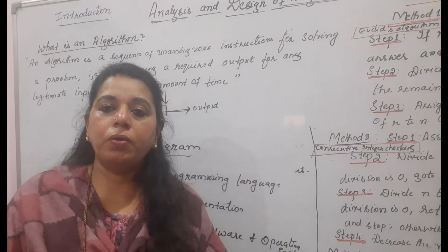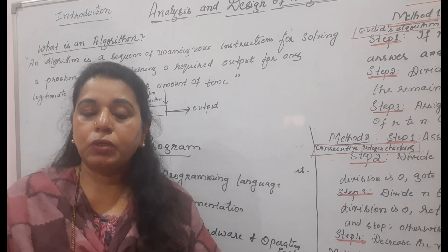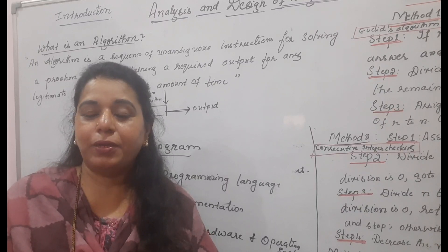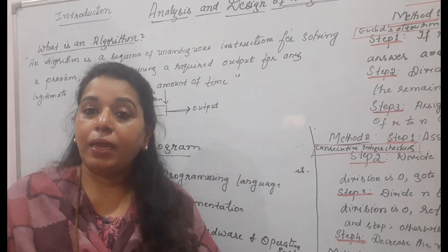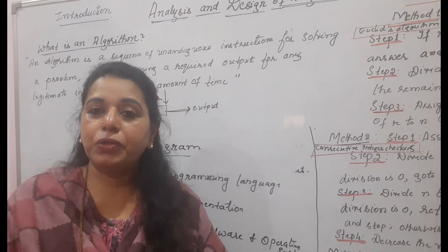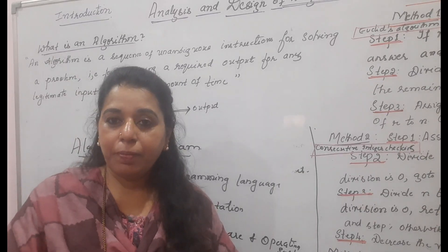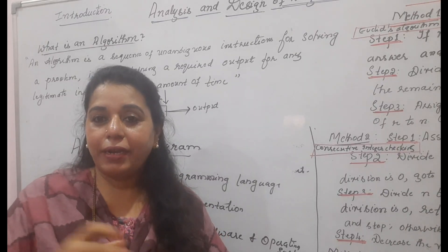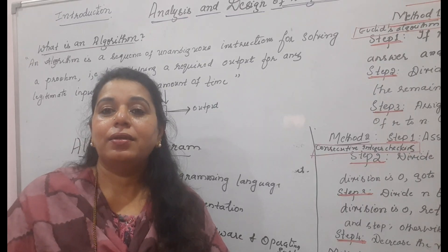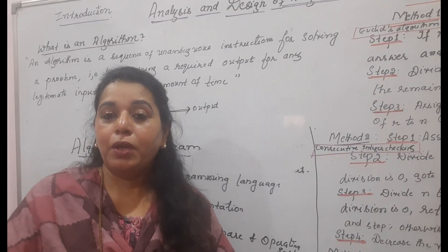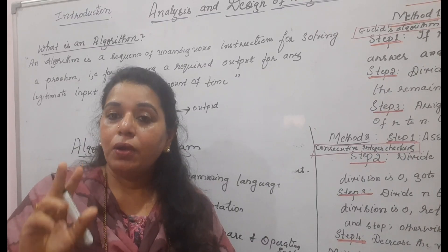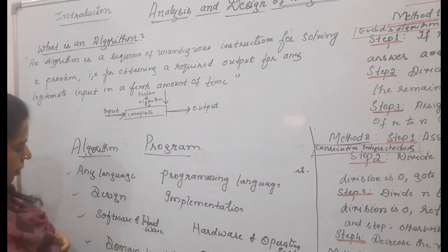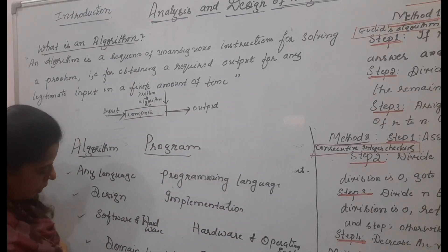Once an algorithm is ready, how do you decide it is an efficient algorithm? To decide the efficiency of an algorithm you test it on two parameters: time and space — which you will learn in detail in future lecture videos. As the title indicates, this course is 'Design and Analysis of Algorithms' — you are designing the algorithms as well as analyzing them. In analyzing, you mainly concentrate on two efficiencies: time efficiency and space efficiency.